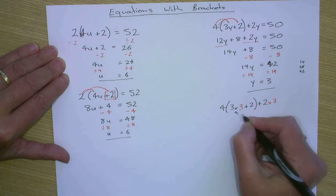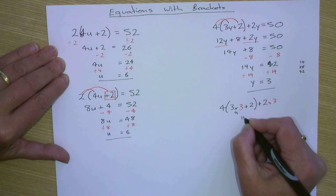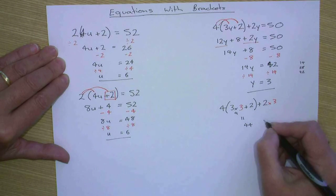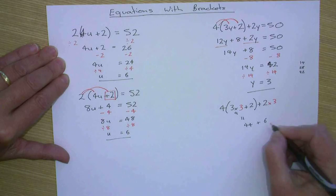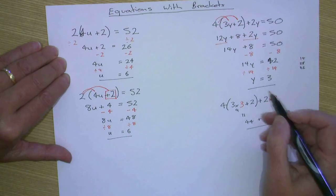Three times three is nine. Nine plus two is eleven. Four times eleven is forty-four. Two times three is six. Forty-four plus six is fifty. So that's correct. y is equal to three.